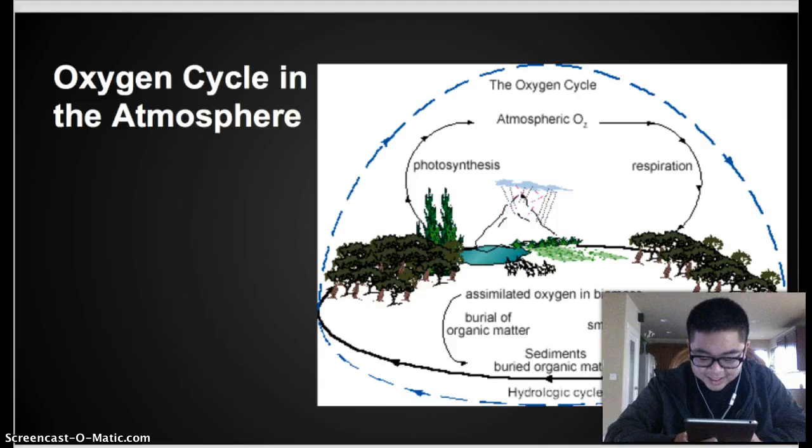Photolysis is when high-energy sunlight breaks apart oxygen-bearing molecules to produce free oxygen. One of the most well-known forms of photolysis is the ozone cycle.